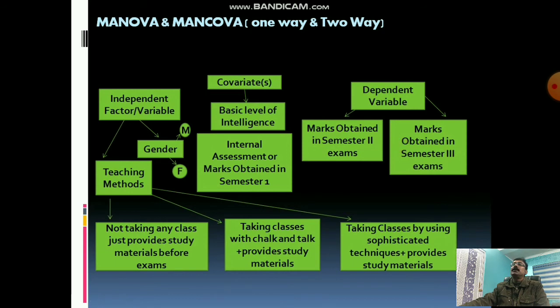To summarize: if there is only one independent variable with three categories, it becomes one-way MANOVA. If we include more than one independent variable — in this case adding gender — it becomes two-way MANOVA.